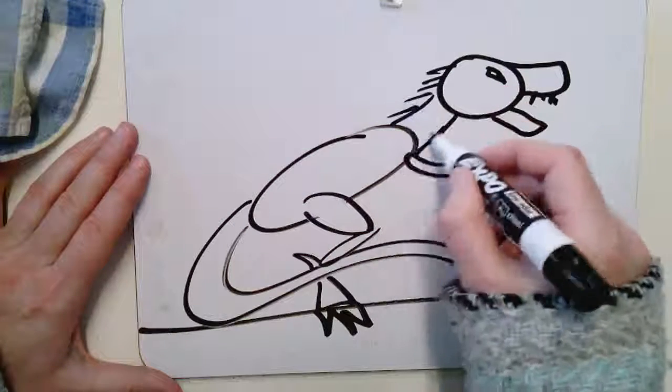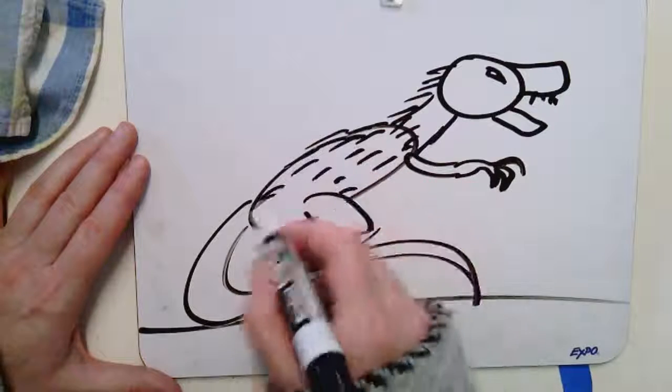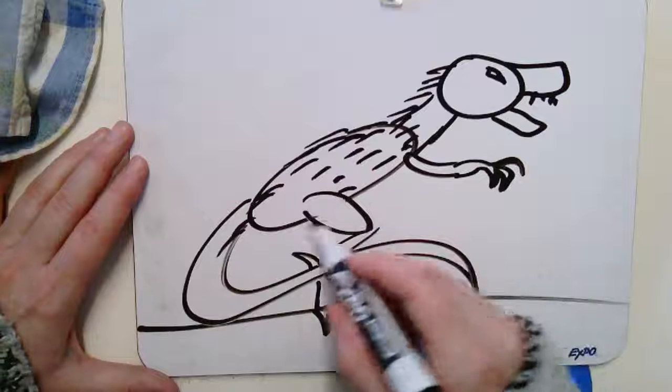If you want, you can add some spikes. I know that these things were covered in feathers now, but I didn't know that as a kid. And if you want to draw his other leg, you can draw his other leg.